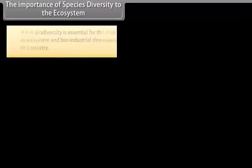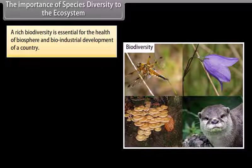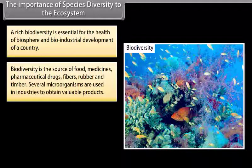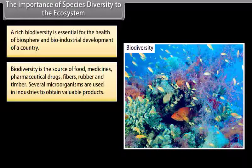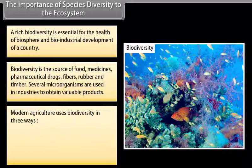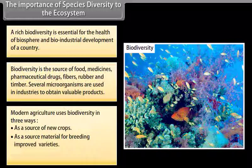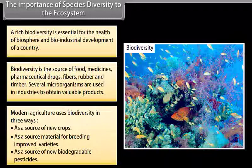The importance of species diversity to the ecosystem. Rich biodiversity is essential for the health of the biosphere and bio-industrial development of a country. Biodiversity is the source of food, medicines, pharmaceutical drugs, fibres, rubber, and timber. Several microorganisms are used in industries to obtain valuable products. Modern agriculture uses biodiversity as a source of new crops, as source material for breeding improved varieties, and as a source of new biodegradable pesticides.